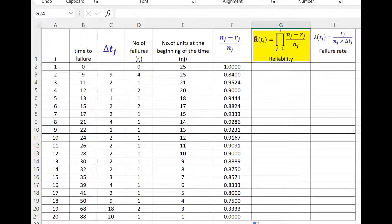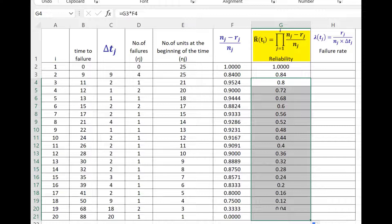Let us continue our calculation now for reliability, which is equal to the multiplication of nj minus rj upon nj terms. So for the first row, it will be just the same value because there is no previous term. For the second term, it will be the first term into the second term. And now this becomes multiplication of the first two terms. So I can use this for the next term that is 0.84 star. That is 0.89. Since all are failures, I can copy this formula.